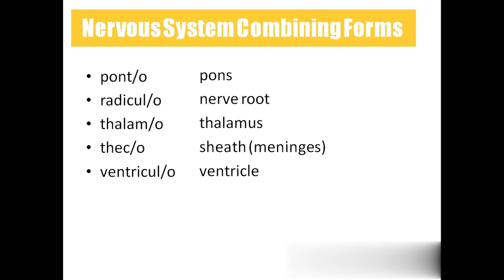Ponto means pons. Radiculo means nerve root. Thalamo means thalamus. Theco means sheet — also called meninges. Ventriculo means ventricle. The inner part of the brain — if you cut the brain, we have spaces inside the brain. We call those spaces as ventricles.